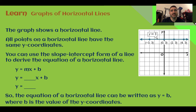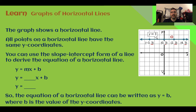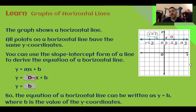Let's learn: Graphs of horizontal lines. This graph shows a horizontal line. All points on that horizontal line have the same y-coordinate — we can see that negative three, zero, and other x-values all have a y-coordinate of three. When it's a horizontal line, the slope is zero. If we plug in zero for our slope, zero times anything is zero, so we're left with y equals b. So if you see a horizontal line, the equation is just y equals b, where b is the value of the y-intercept.